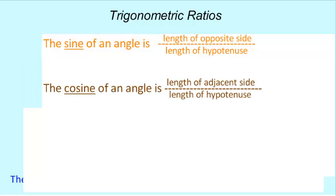There is a cosine as well. That is, again, using one of the acute angles in the triangle. You can take the length of the adjacent side divided by the length of the hypotenuse.